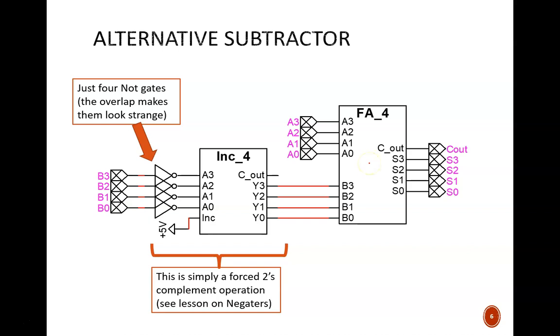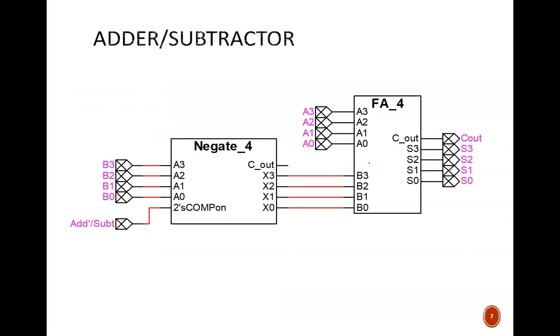There's another reason for structuring the subtraction this way. We can easily adapt the circuit to allow us the option of either adding or subtracting, as you see here. This control switch determines the mode, with the notation telling us that 0 means add, and 1 means subtract.